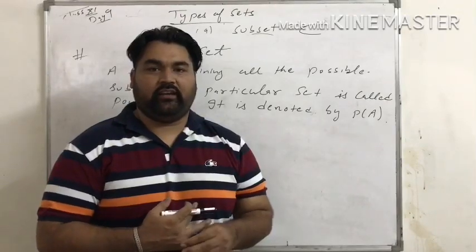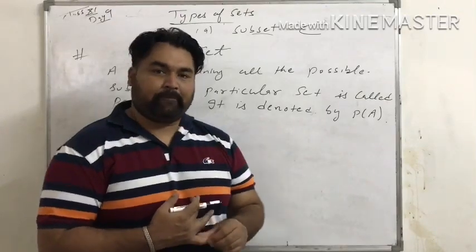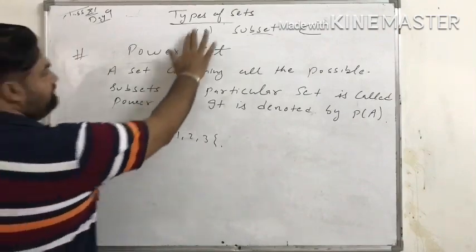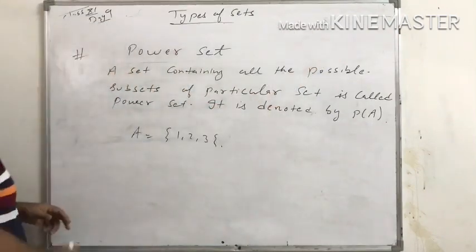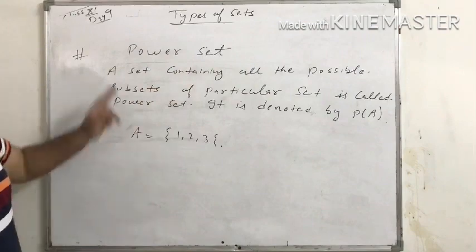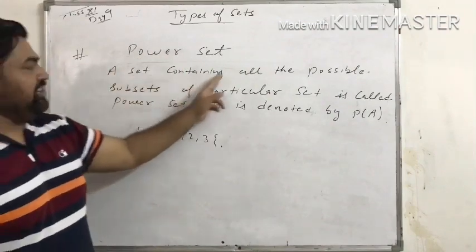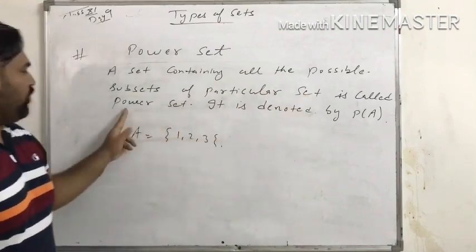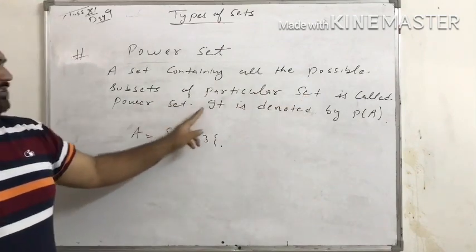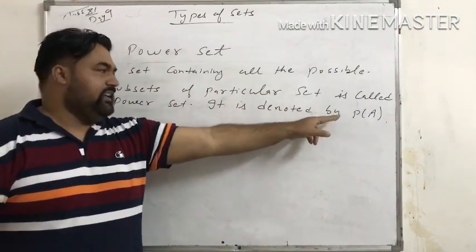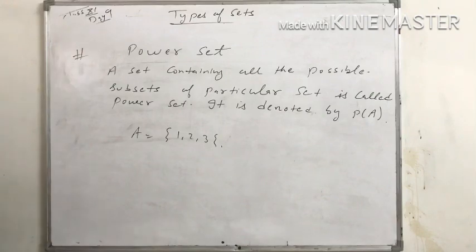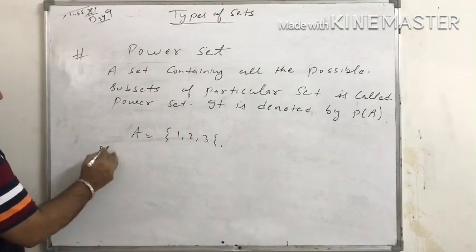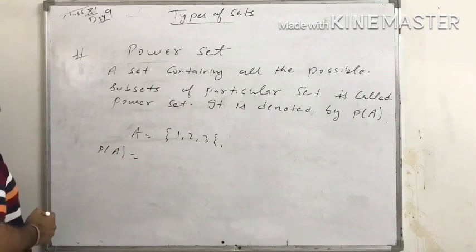Good morning students. Today is day 9, the chapter is Sets, and the first concept is Power Set. A set containing all the possible subsets of a particular set is called a power set. It is denoted by P(A). For example, if A equals {1, 2, 3}, what is the power set of A?